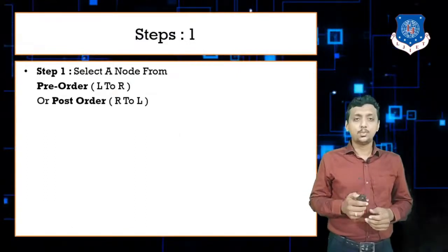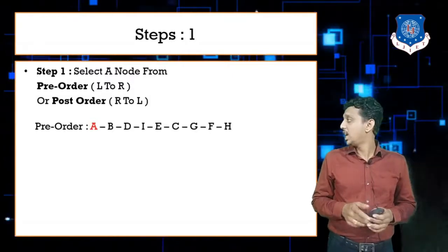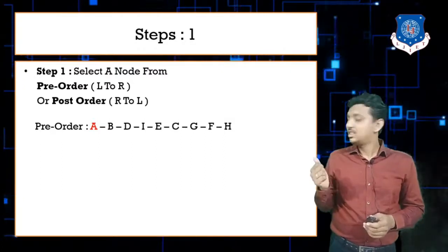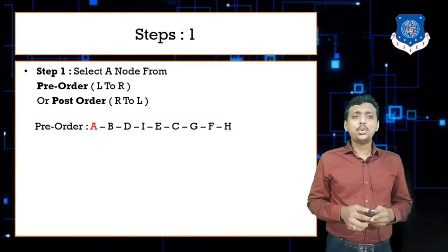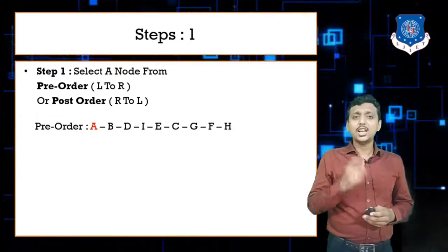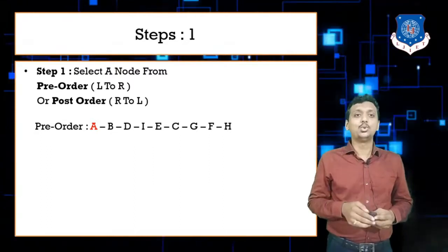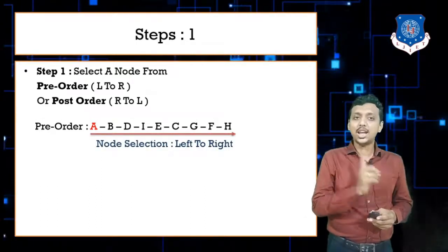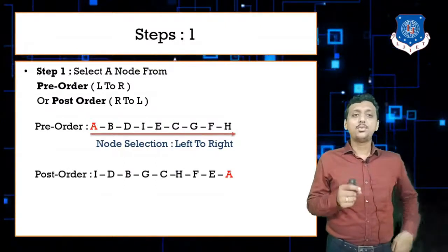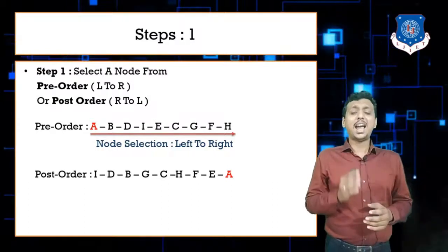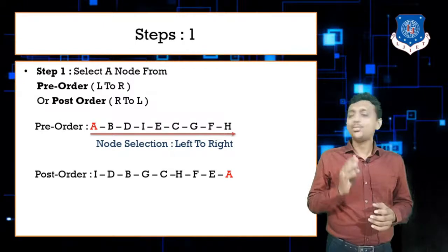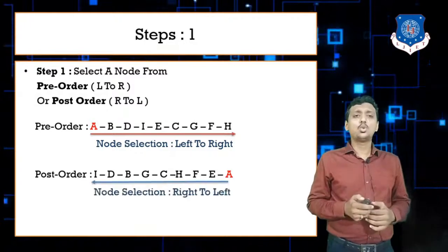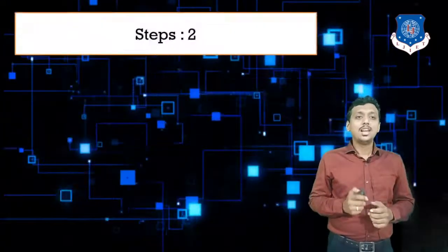For example, here we have a pre-order sequence: A B D I E C G F H. The highlighted node is A, which is our root node. Since we have pre-order, we select from left to right. For post-order — which contains I T B G C H F E A — you always go from right to left.